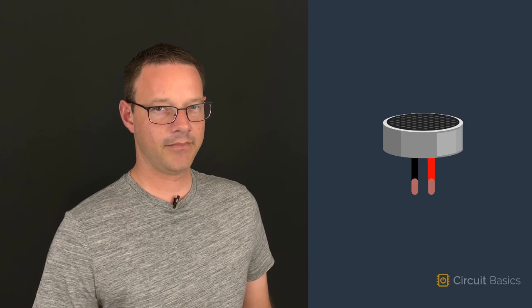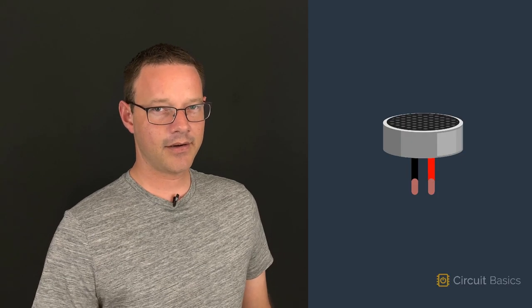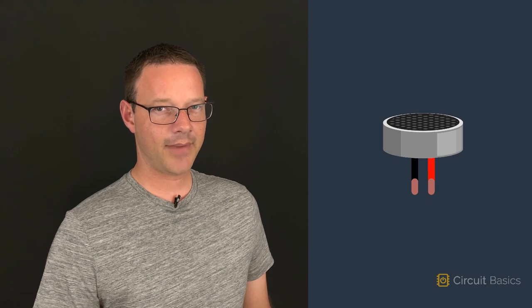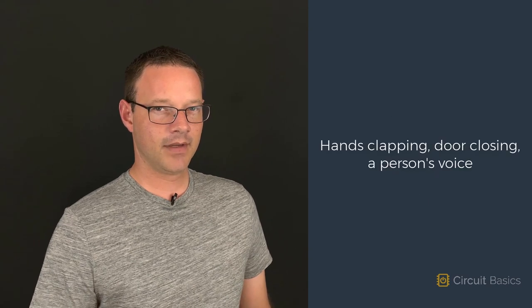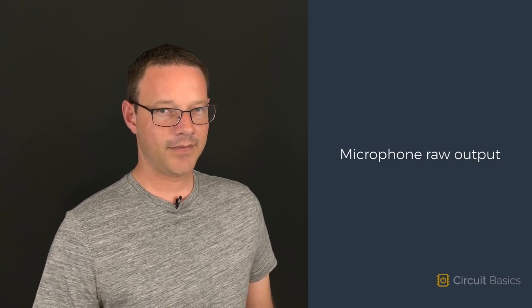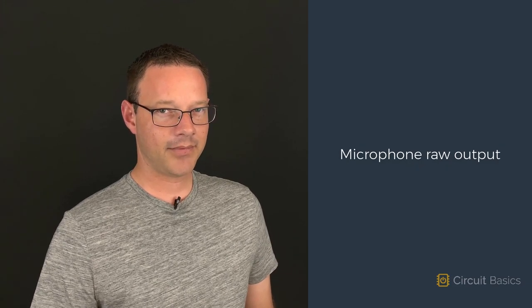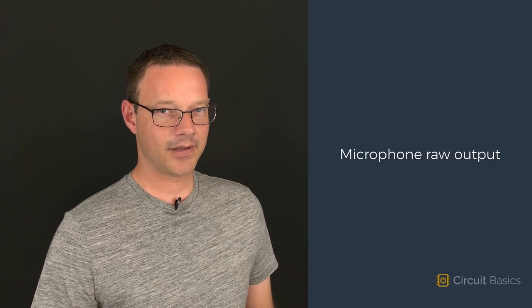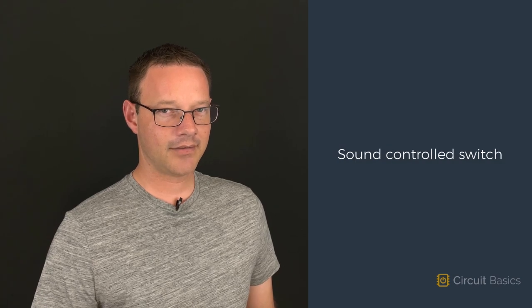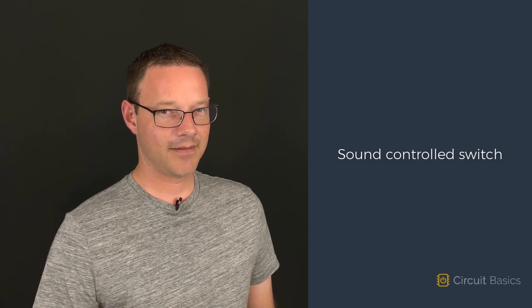Using an Electret microphone, the Arduino can detect sounds and perform actions based on the input it receives. For example, the sound of hands clapping, a door closing, or someone's voice can be used to trigger an Arduino's output. In this video, we'll take a look at what the output of the microphones looks like, then we'll build a circuit that responds to sound by lighting up an LED.